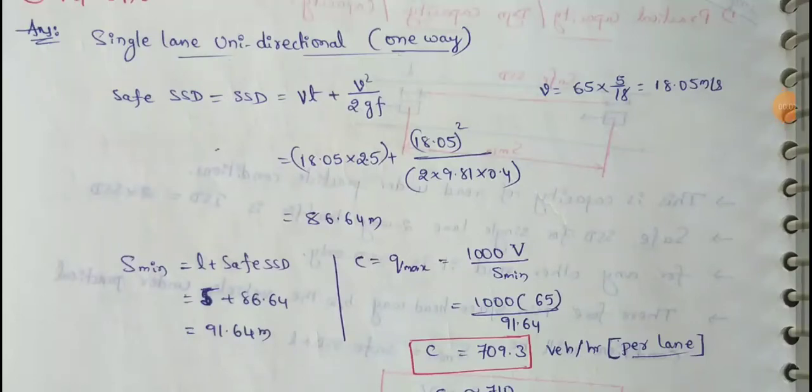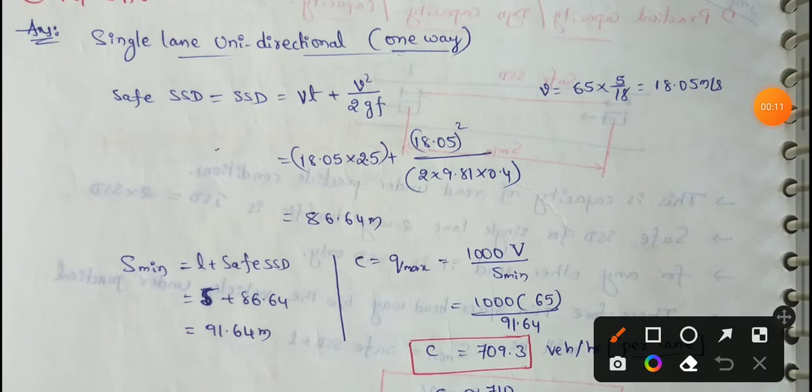Next topic, practical capacity. Based on this video, we will discuss a solid example of the problem. First, we will provide a single lane unidirectional highway as a design speed of 65 km per hour. Single lane unidirectional is one way, design speed of 65 km per hour.